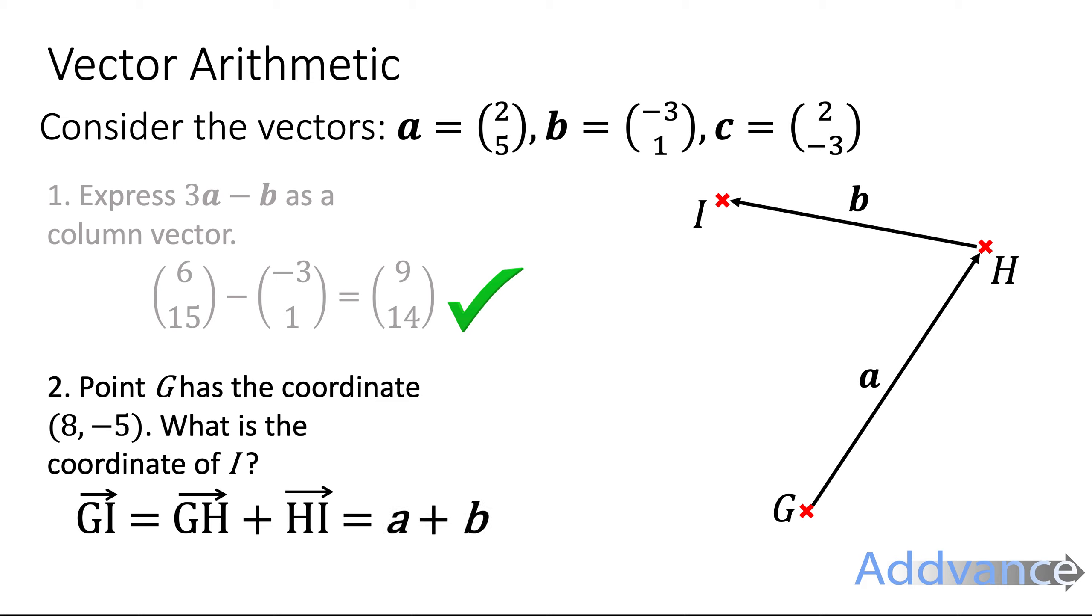Okay which is a plus b, the vector a and then the vector b. We're substituting those column vectors (2,5) plus (-3,1) which we simplify, two plus minus three is minus one and then five plus one is six. So to go from G to I you go minus one across six up.